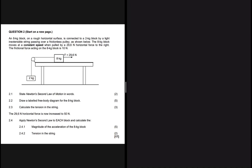It says: an 8 kg block on a rough horizontal surface is connected to a 2 kg block by a light inextensible string passing over a frictionless pulley. The 8 kg block moves at constant speed. When we have constant speed, we know that acceleration equals zero meters per second squared, which implies that F_net equals zero.